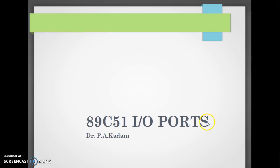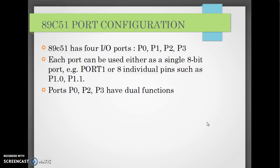Now we will see 89C51 IO ports. The 89C51 uses 4 IO ports, port 0 to port 3. All these ports can either be used as an individual 8-bit number — we can combine all 8 pins which gives us an 8-bit number — or each pin can be programmed to set or clear individually. Some ports have dual functions; only port 1 has no dual function.